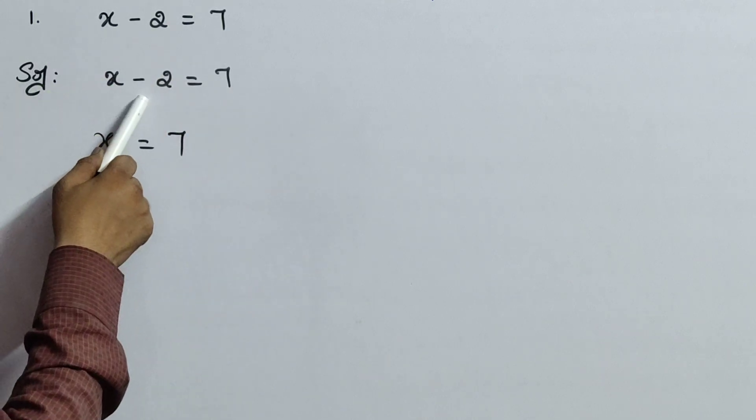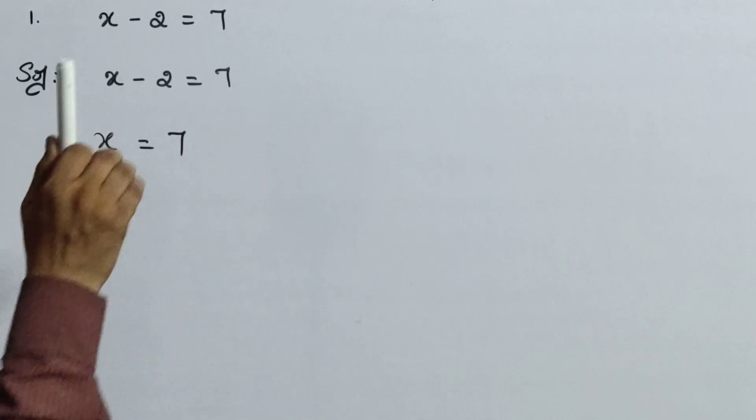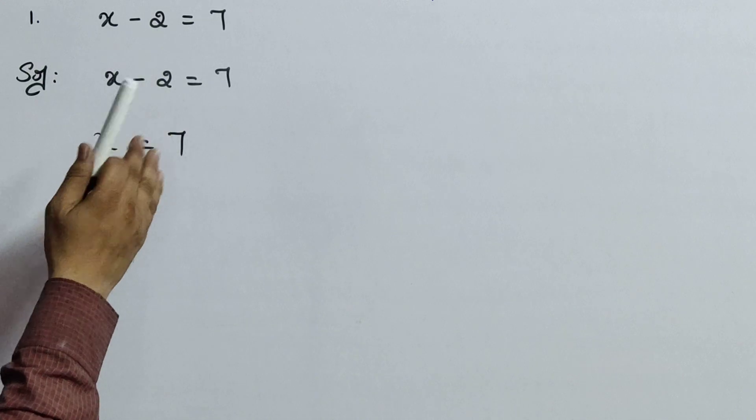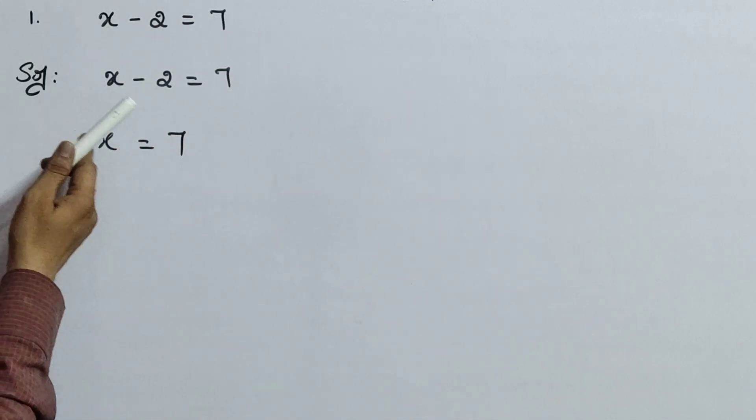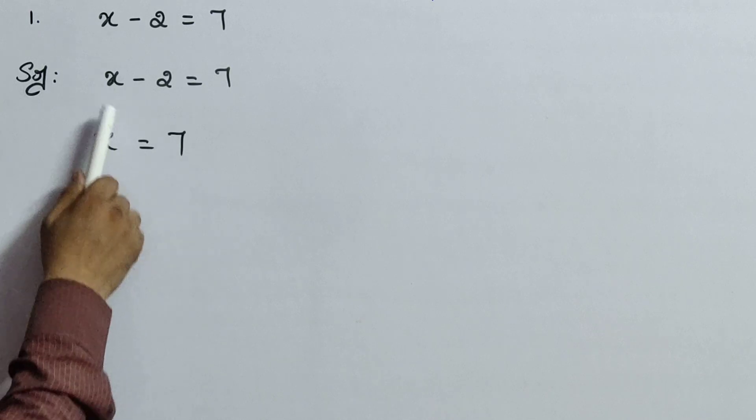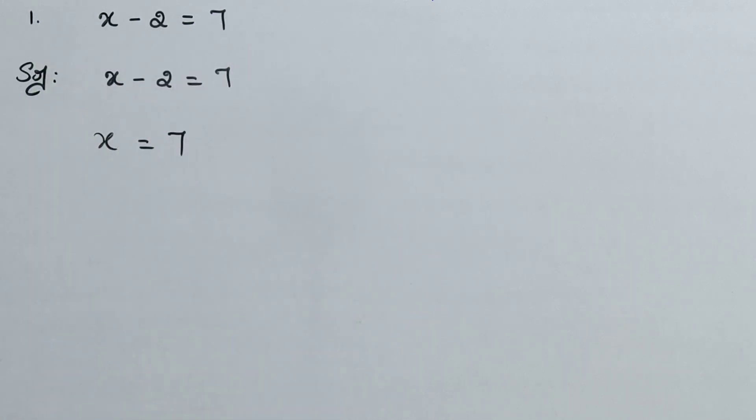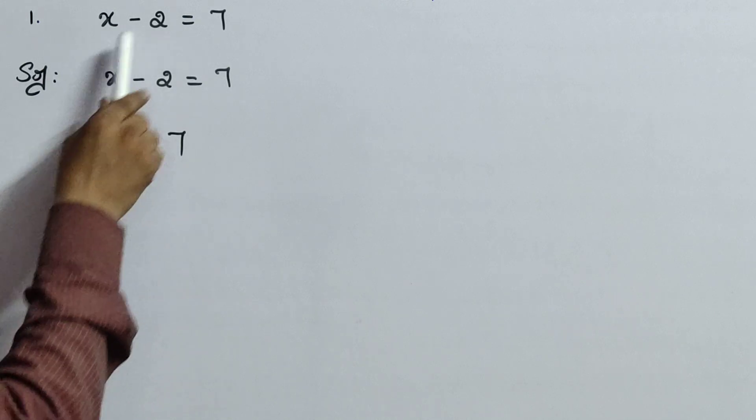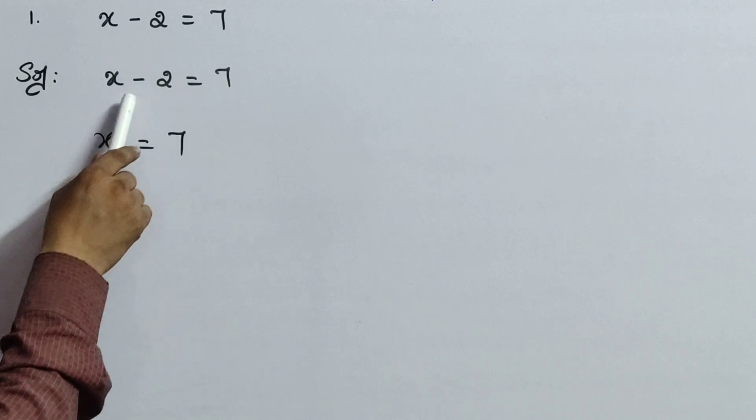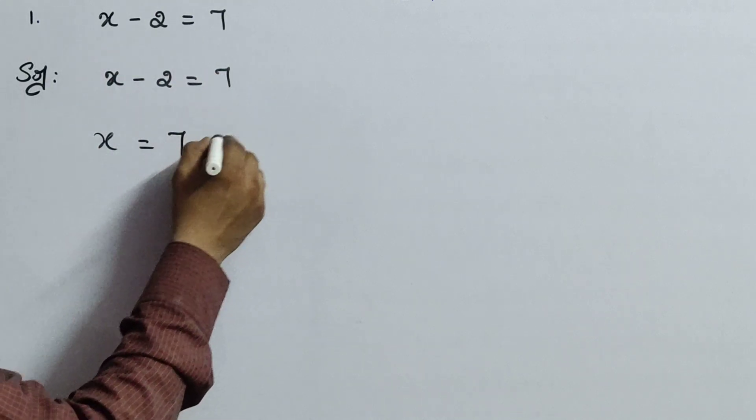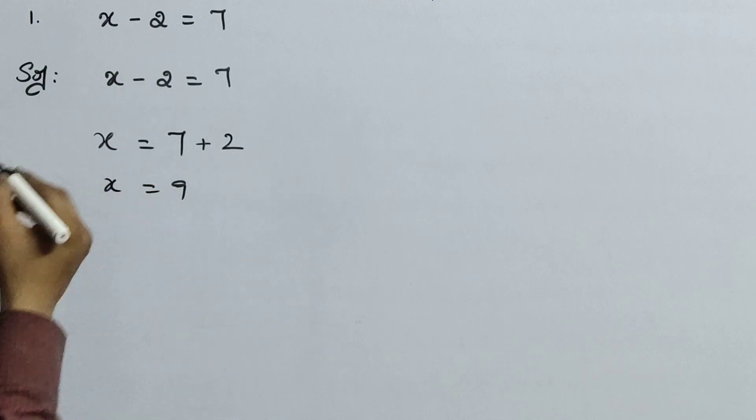Now you may ask, what happened to this minus 2? Where it went off? Nothing will happen. We are sending all the numerals to that side and bringing all the variables to one side. That means LHS, we are sending all the numerals to right hand side. So minus 2 will transpose. It is changing the position. Minus 2 will become plus 2. So 7 plus 2, that is x equals to 9.